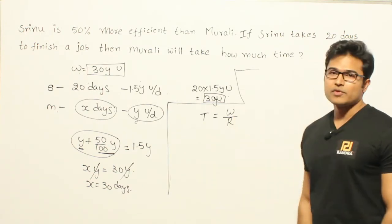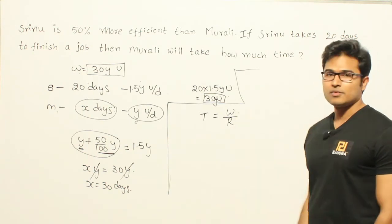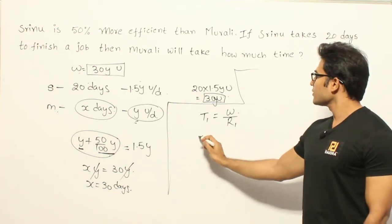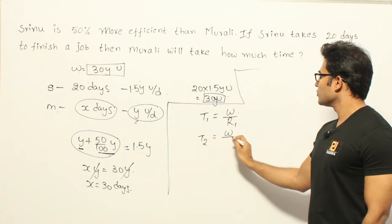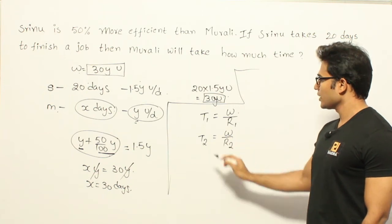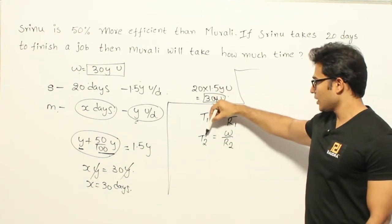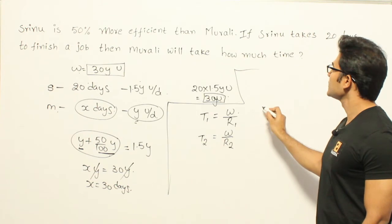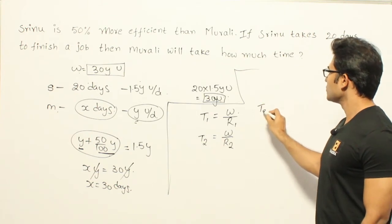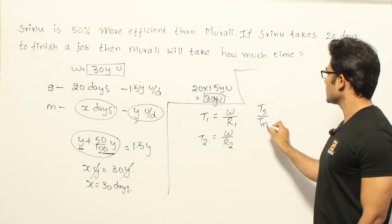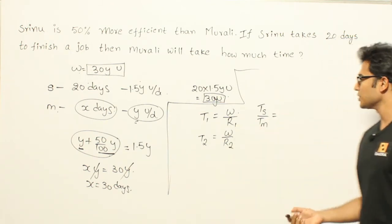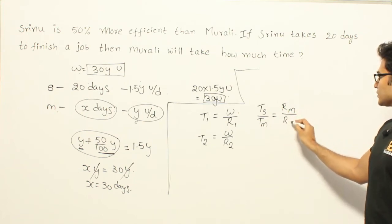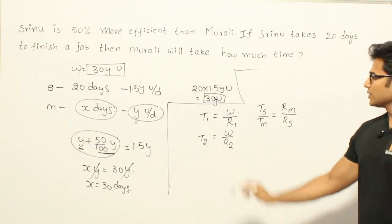Since for both of them the work done is the same, you can write T1 = W/R1 and T2 = W/R2. So time taken by the first person divided by time taken by the second person will be equal to R2 by R1. In this case, time taken by Sreedoo divided by time taken by Murali will be equal to the rate of Murali divided by the rate of Sreedoo, given that work is constant.